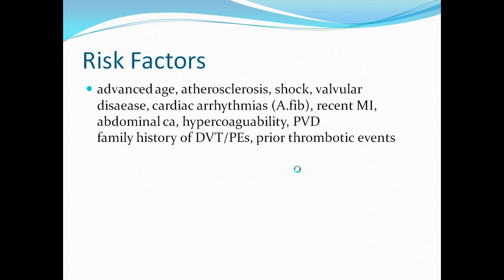Risk factors for mesenteric ischemia are your usual atherosclerotic factors: advanced age, atherosclerosis, shock, and valvular disease. Sometimes you can get vegetations on valves that can shoot outwards. Cardiac arrhythmia, such as atrial fibrillation, can lead to thrombus formation within the ventricles.